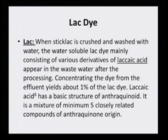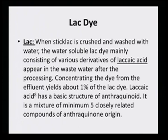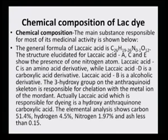Coming to the lac dye: this dye is not from plant origin, but it comes under the category of natural dye. It is obtained when stick lac is crushed and washed with water. The water-soluble lac dye mainly consists of various derivatives of laccaic acid, which appear in the waste water after processing. Concentrating the dye from the effluent yields about 1 percent of lac dye. Laccaic acid has a basic structure of anthraquinoid — it is a mixture of minimum 5 closely related compounds of anthraquinone origin. This lac dye is not just one dye, just as madder/rubia has six components.